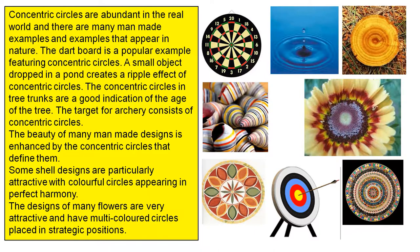The concentric circles in tree trunks are a good indication of the age of the tree. The target for archery also consists of concentric circles.